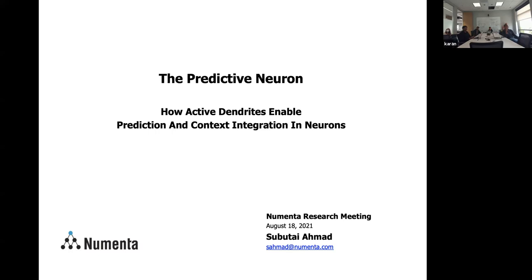I should apologize in advance — I just slapped this together this morning from a bunch of existing slides, so I may have missed some things. The title really tries to say what we think is going on with dendrites and neurons. I'm calling this the predictive neuron — the neuron is predicting stuff. This is based on active dendrites, and I'm going to show how active dendrites lead to prediction and context integration in neurons. It's a very flexible concept that can be used in many different ways.